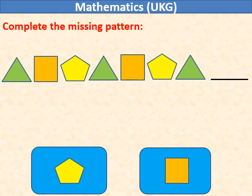Complete the missing pattern. We have triangle, square, and pentagon. Again, we have triangle, square, and pentagon. So, in the third group, after triangle, it will be square.